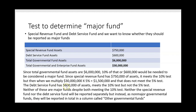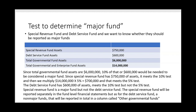The debt service fund has $600,000 of assets — it barely meets the 10% test since 10% of $6 million is exactly $600,000. But it also fails the 5% test: it would need over $1,500,000 to pass, and it only has $600,000. So once again, neither fund is a major fund — despite both meeting the 10% test, neither will be reported separately. Both will be reported as non-major governmental funds in total in a column called 'other governmental funds' in the fund-based financial statement.